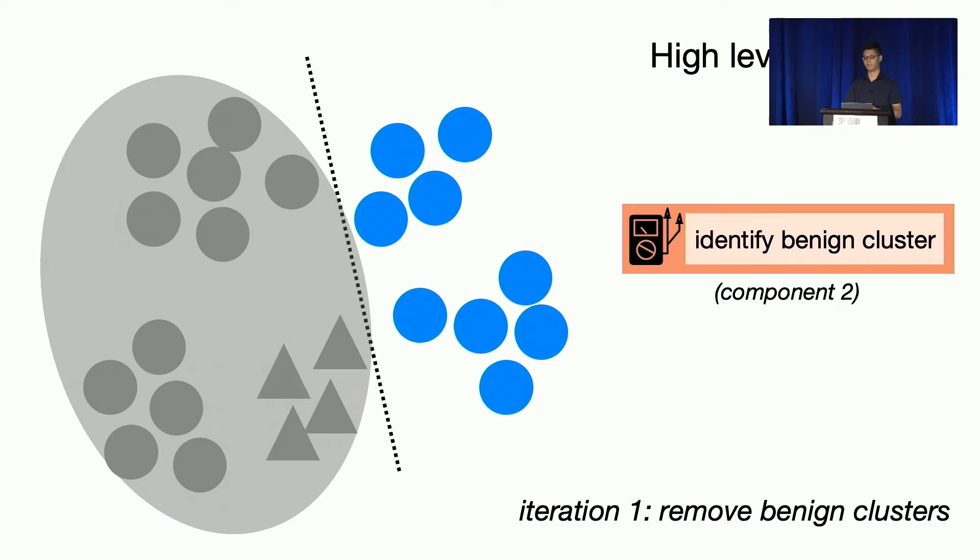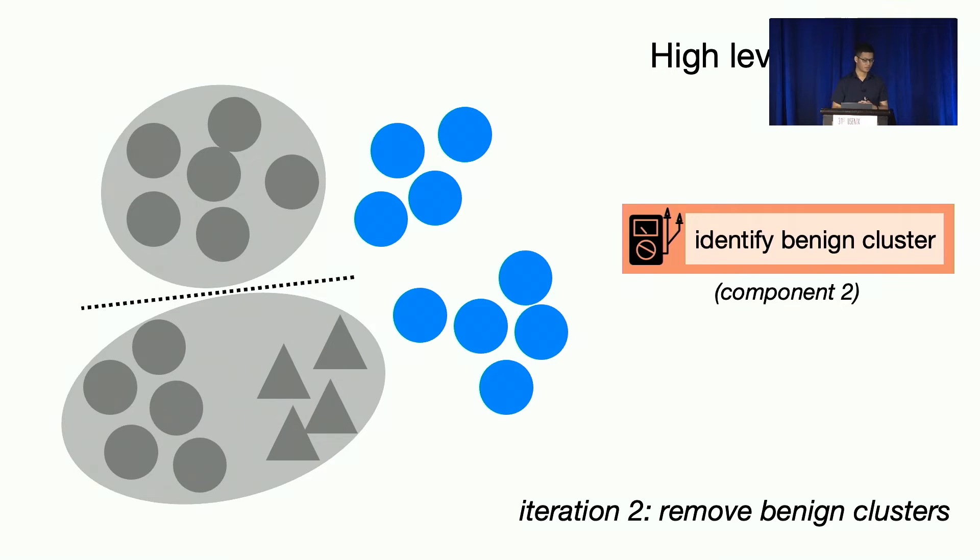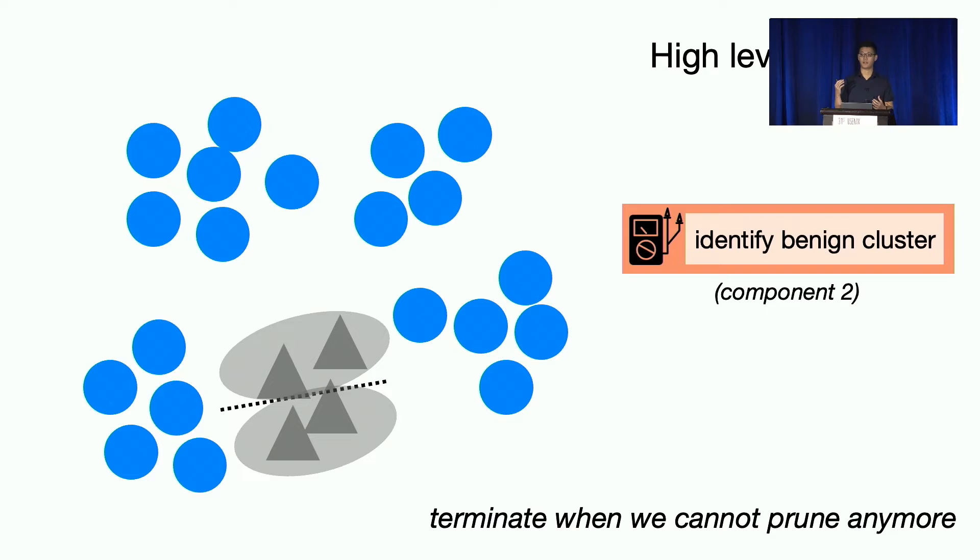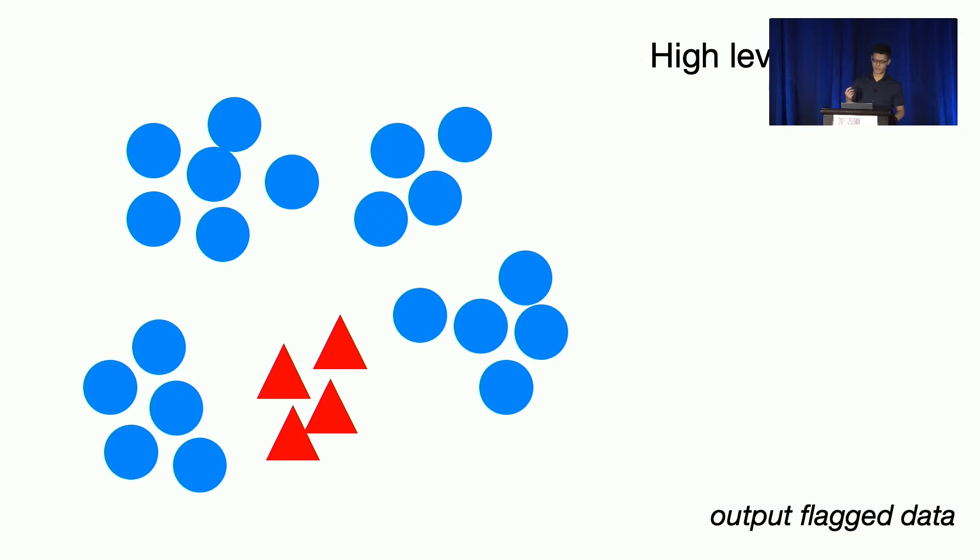So separate all training data into two partitions. And we use a second component to identify which cluster is benign. And in this case, this part is benign. We keep going with the binary search. Another binary cut for the rest of the data. Find this is benign. Keep going until we can no longer find any benign clusters. And then we know the rest data must be poisoned. So we output these data as the data flagged by our system.